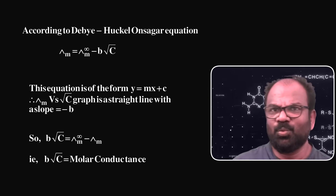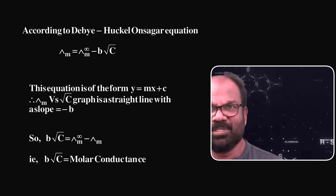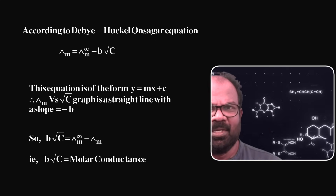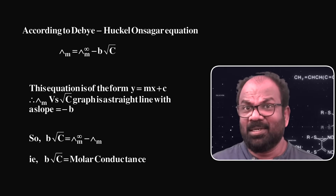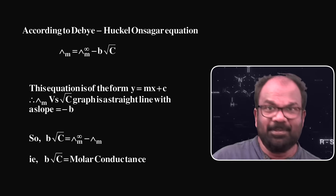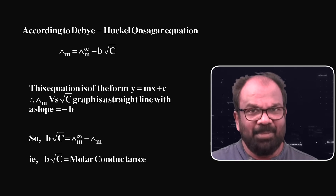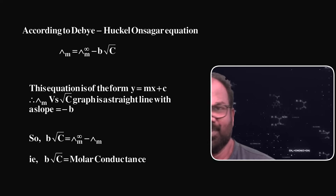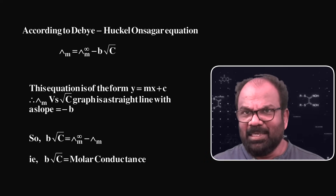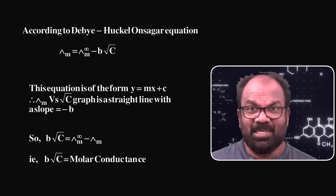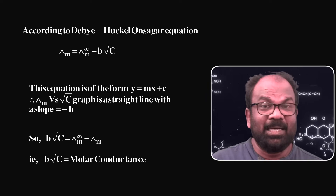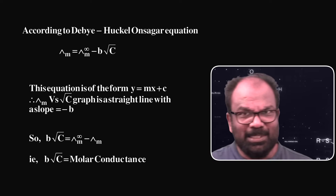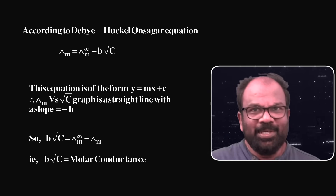According to the Debye-Hückel-Onsager equation: λm = λm∞ − B√c, where λm is molar conductance, λm∞ is molar conductance at infinite dilution, B is a constant, and c is the concentration of the solution. This equation is of the form y = mx + c, so the λm versus √c graph is a straight line having slope equal to −B.